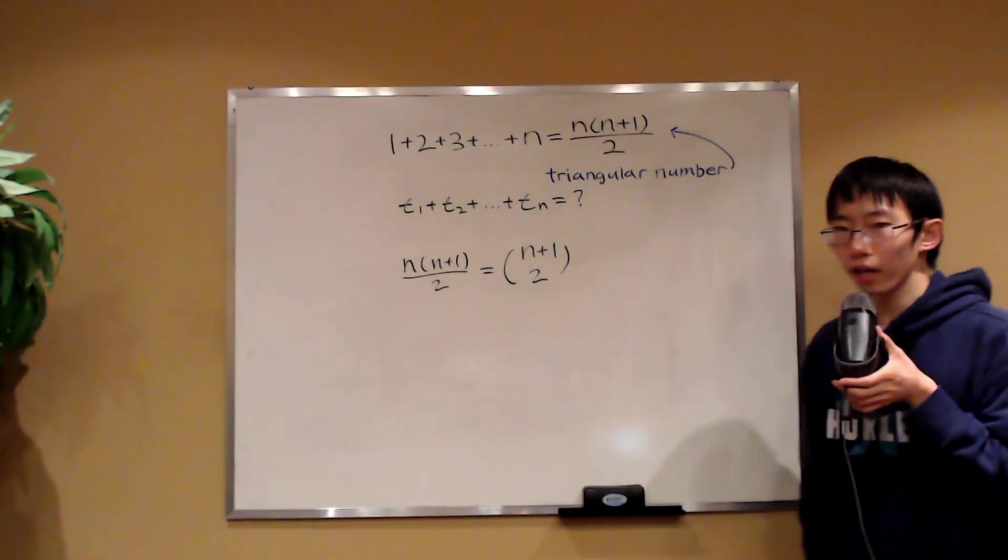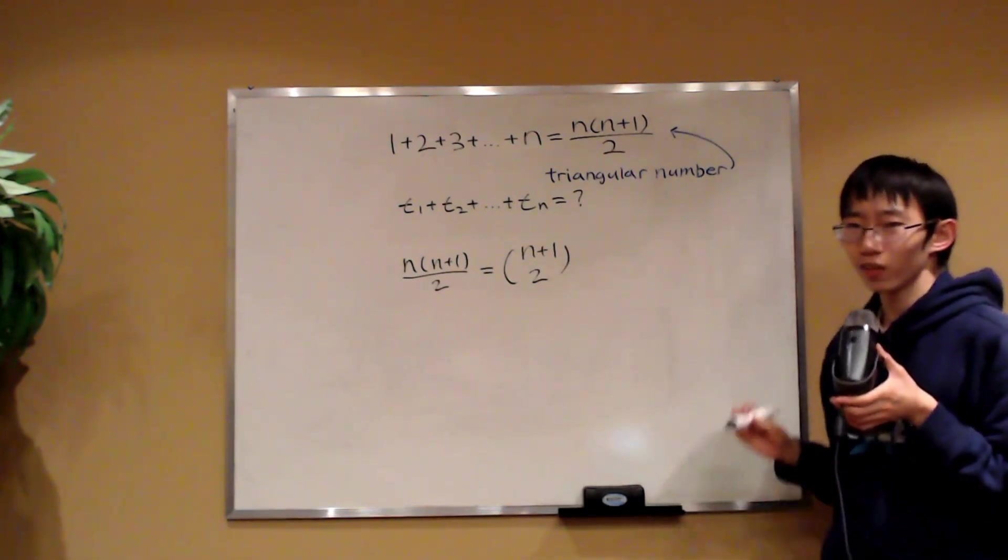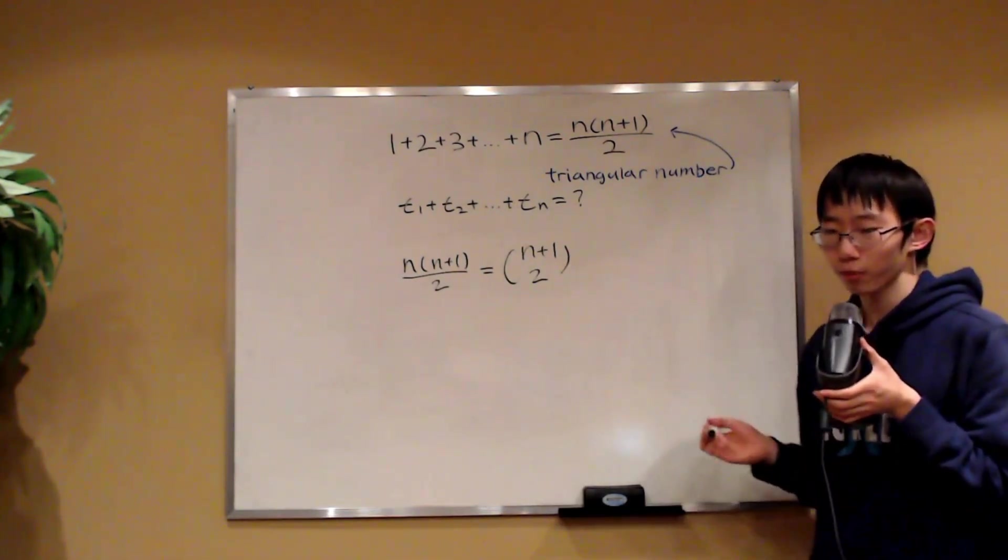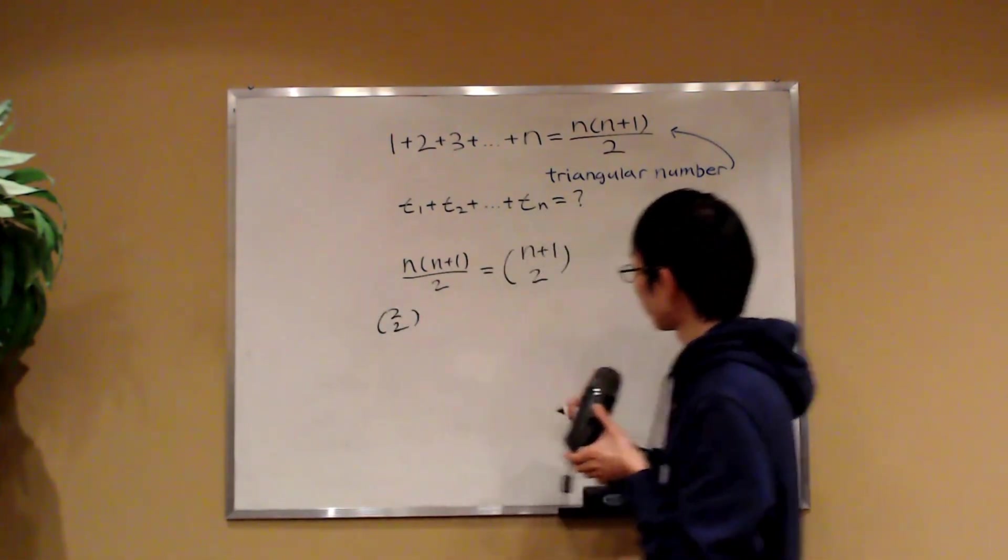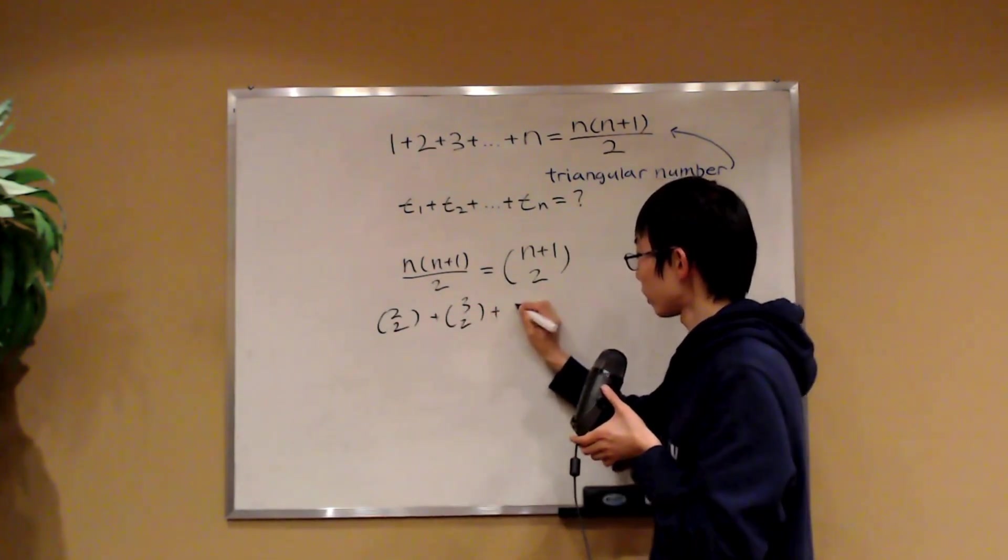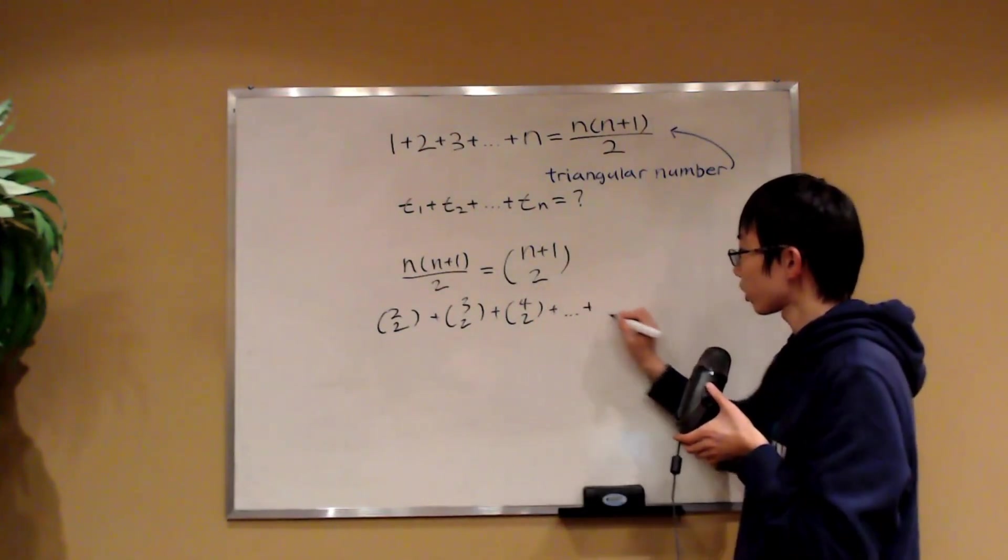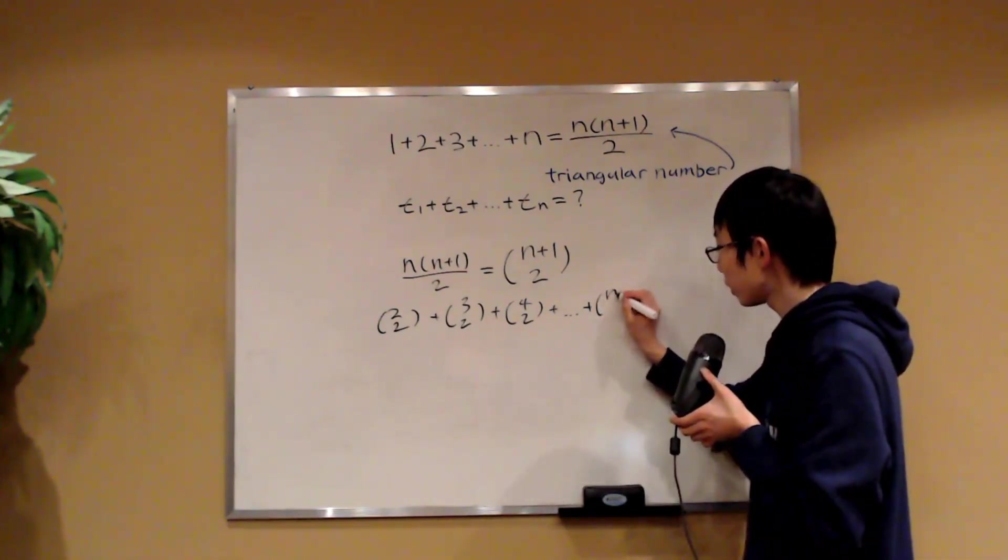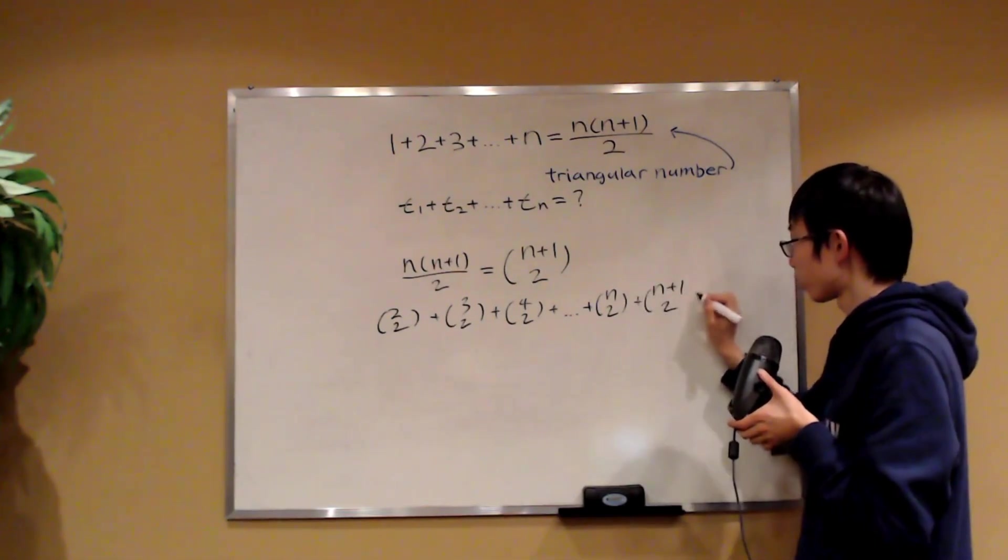So let's plug in n for 1, 2, 3, all the way to n. And that will get us the sum of the first n triangular numbers. So we would have 2 choose 2, and then plus 3 choose 2, and then plus 4 choose 2, and then plus all the way until we have, I'm going to write the last two terms, that's n choose 2 plus n plus 1 choose 2.